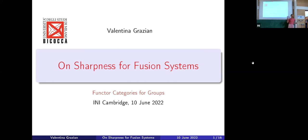For today, the usual attendance list for the presence — the NMS would like to know who is attending these meetings, so I will circulate this. And otherwise we can start with the math. So today it's our pleasure to start this meeting with Valentina Grazian from Milano di Corca, who will talk to us about sharpness for fusion systems.